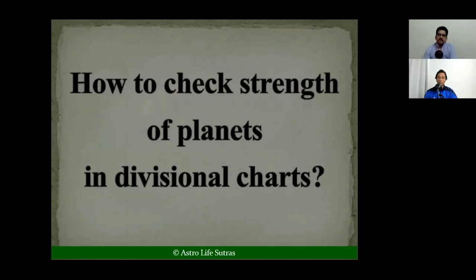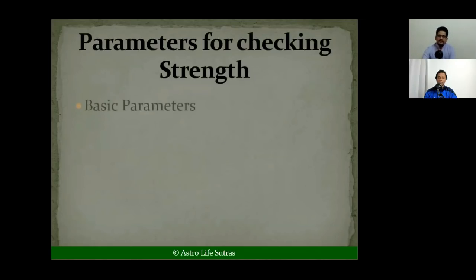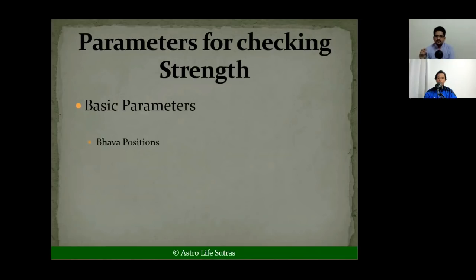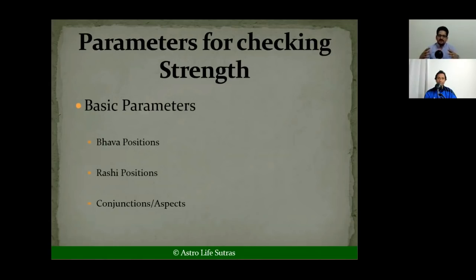Now the question again: how do we check the strength of a planet in divisional charts? Basically, for checking planetary strength we focus on three basic parameters: one is Bhava position — if a planet is in a trine or angle it's considered strong; if in the 6th, 8th, or 12th it's considered weak. The second is sign or Rashi position — whether it's in a friendly sign, exalted, etc. The third is conjunctions and aspects. Vimshopak Bala focuses only on Rashi position.